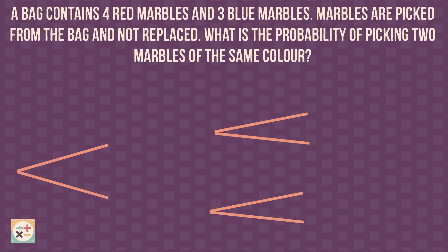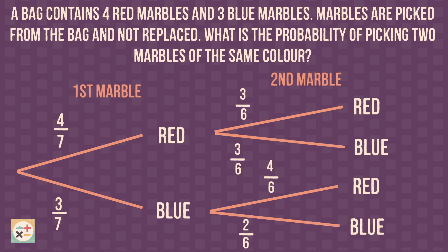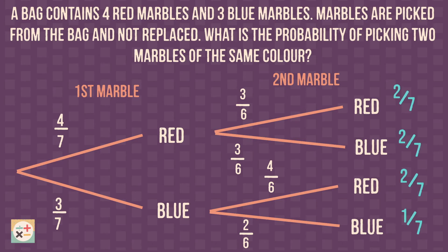What if we are asked to calculate the probability for more than one combination of outcomes? We simply add up the end probabilities for those combinations. Notice that the probabilities for the second marble are different to the first. This is because the marbles are not replaced, and these are called conditional probabilities.